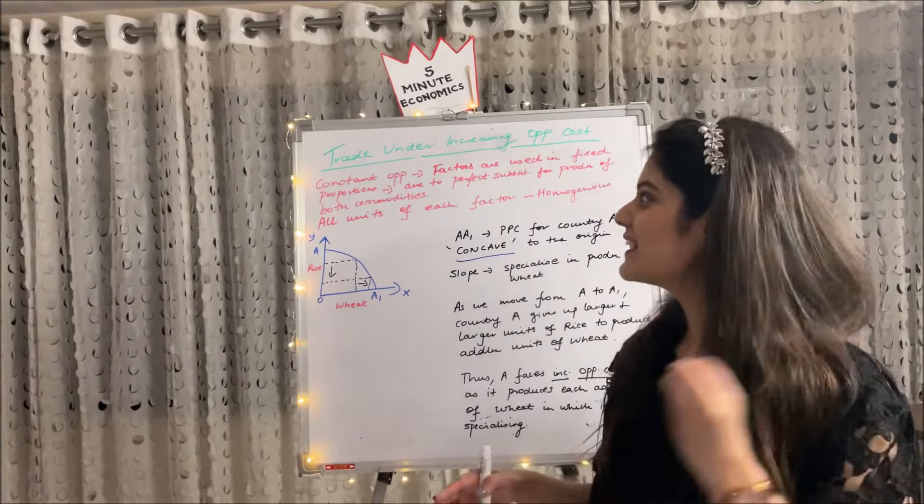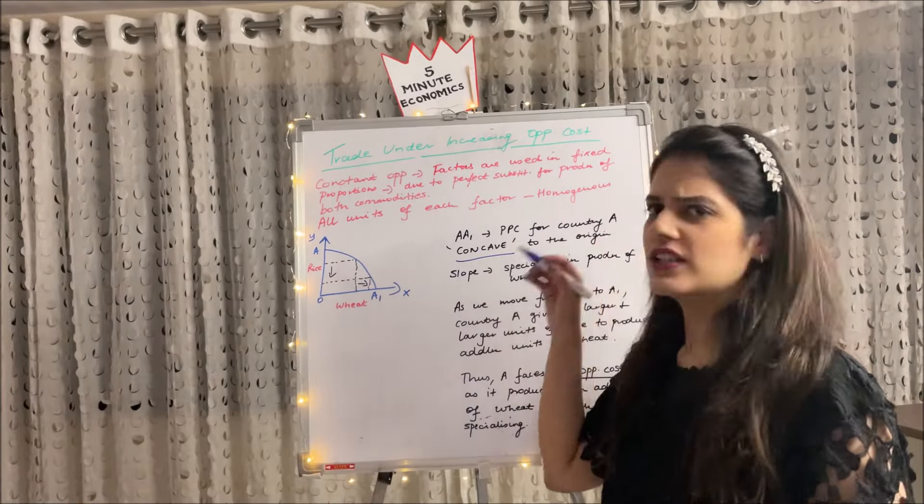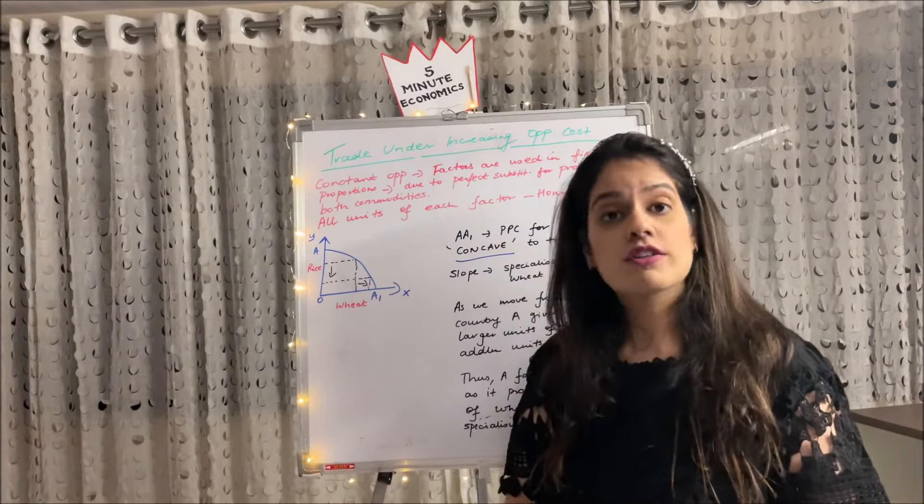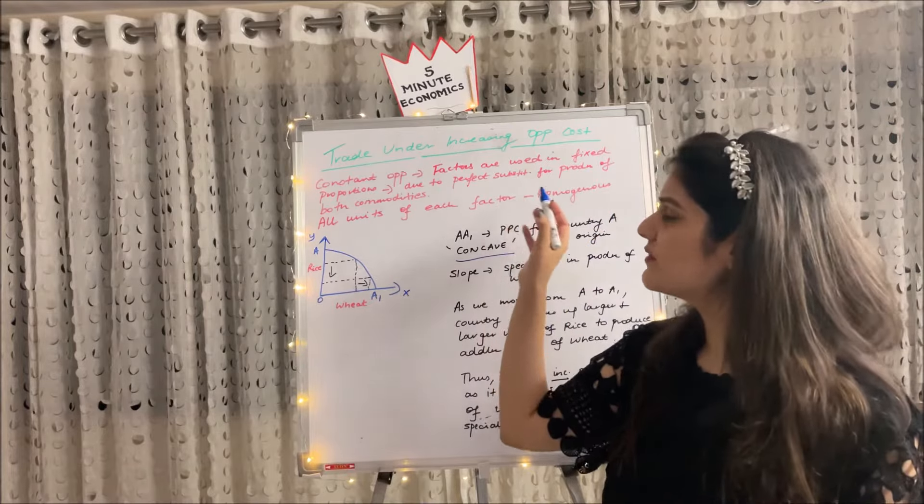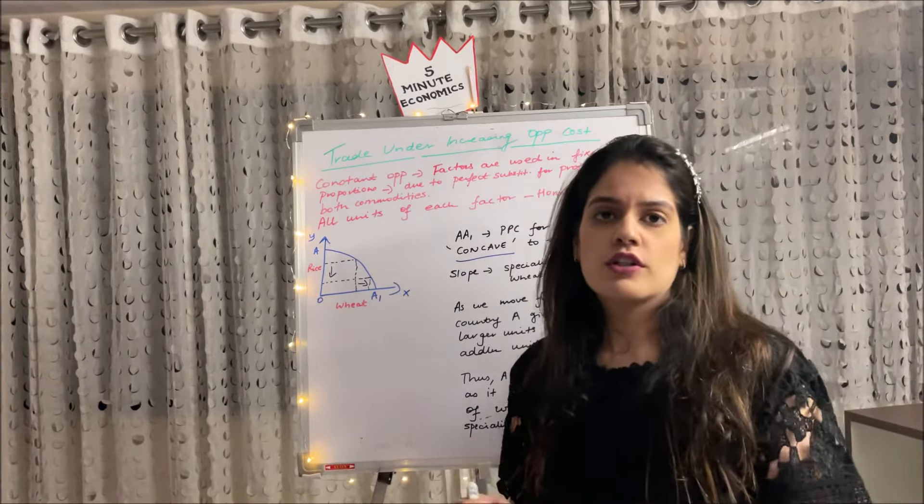So now, moving ahead to trade and increasing opportunity cost. There were a few shortcomings of trade under constant opportunity cost and hence we have trade under increasing opportunity cost. Number one shortcoming is that under constant opportunity cost, factors were used in fixed proportion due to perfect substitutability for the factors of production.